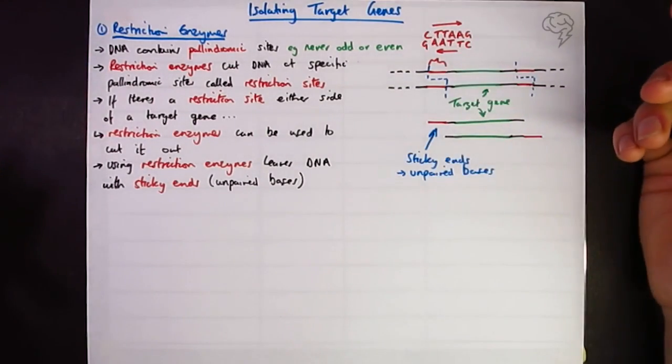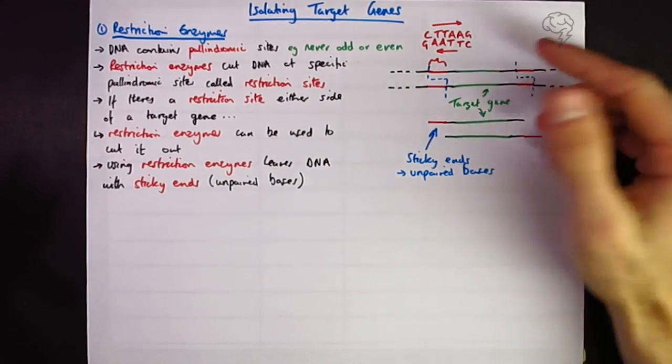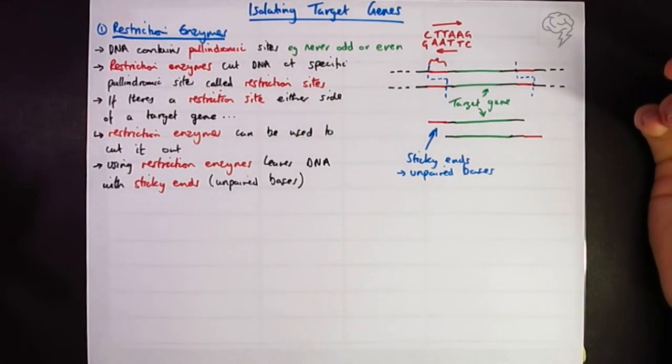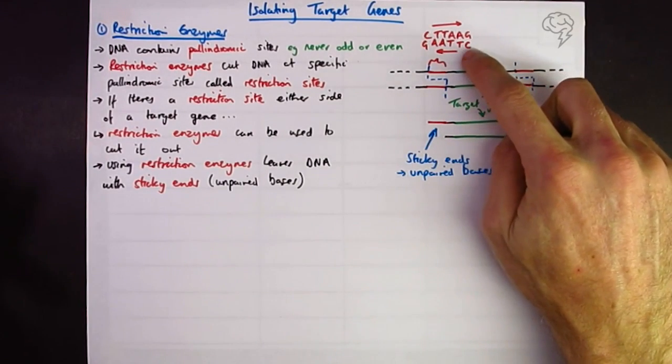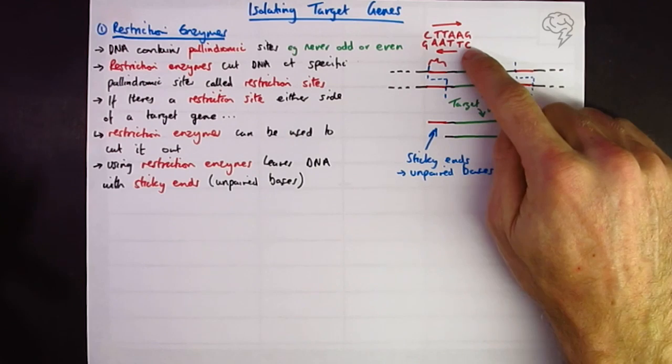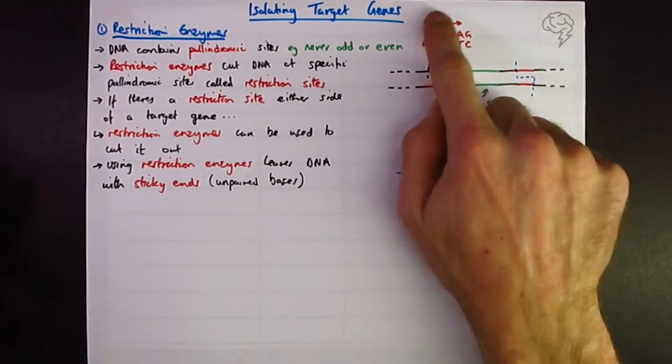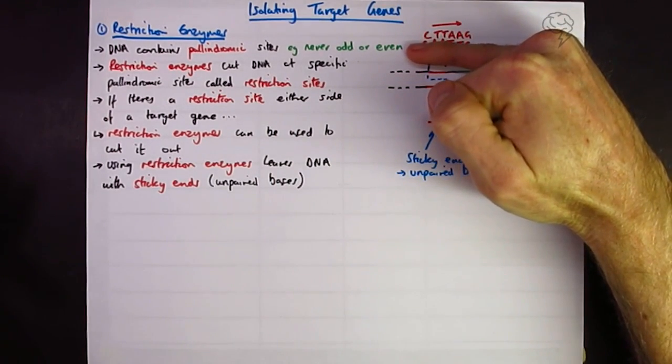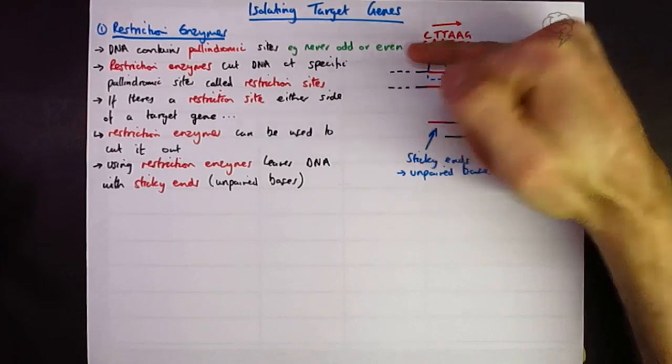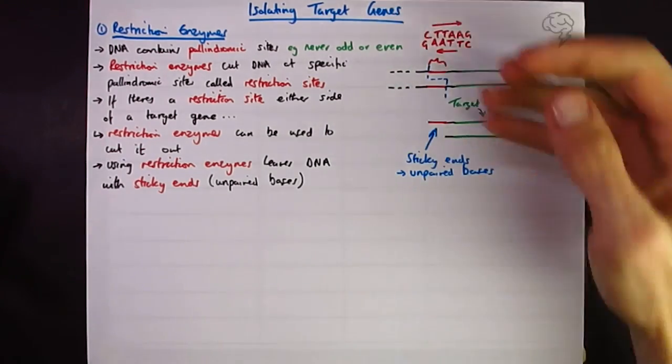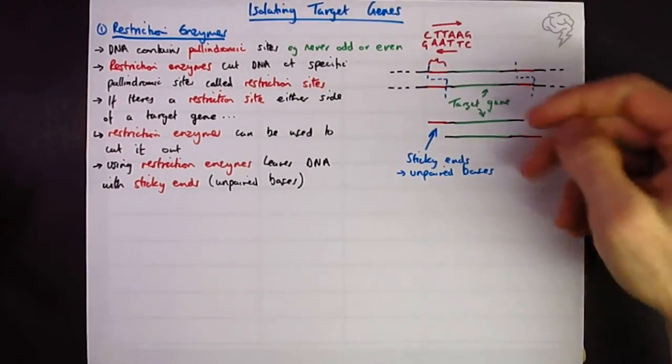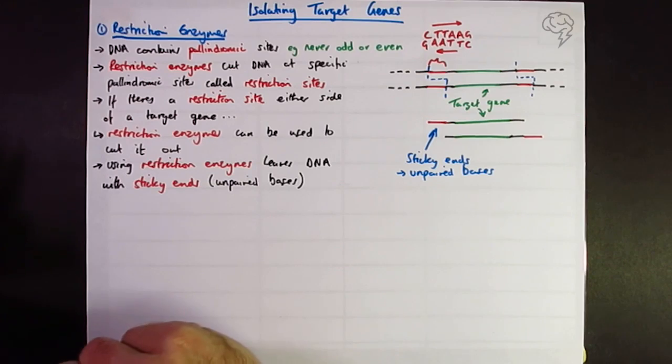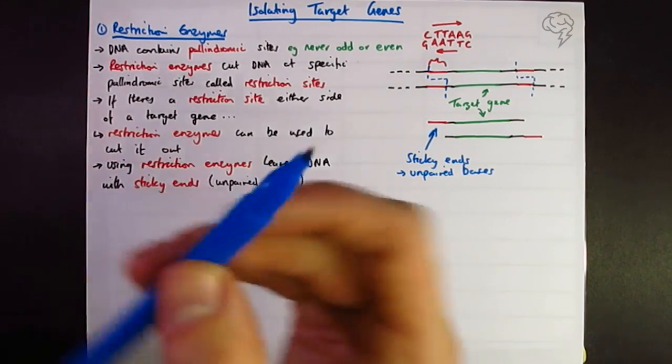So each time you use a specific restriction enzyme, you're going to end up with the same sticky end. This is super useful in gene technologies, because if we find this recognition site in another bit of DNA from a different organism, if we use the same enzyme, it's going to cut the same site and leave the same sticky end. This sticky end would be C-T-T-A-A-G, and the complementary partner to that will be the same. Therefore, we can use this to basically cut and paste DNA, a little bit like we can with a Word document.